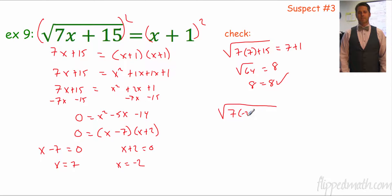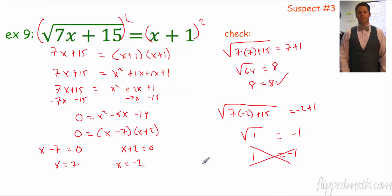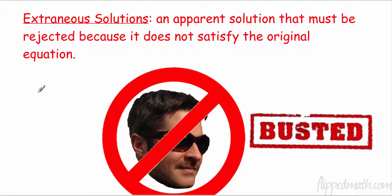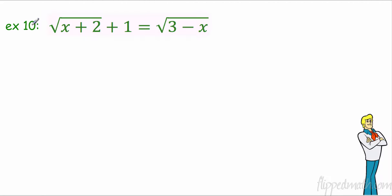Let's try x equals negative 2: 7 times negative 2 plus 15. Does that equal negative 2 plus 1? Negative 14 plus 15 is 1. The square root of 1 is 1. But negative 2 plus 1 is negative 1. So 1 does not equal negative 1 — x equals negative 2 does not work. The only answer is x equals 7. Mr. Brust, you are busted. This is what we call an extraneous solution — an apparent solution that must be rejected because it does not satisfy the original equation.